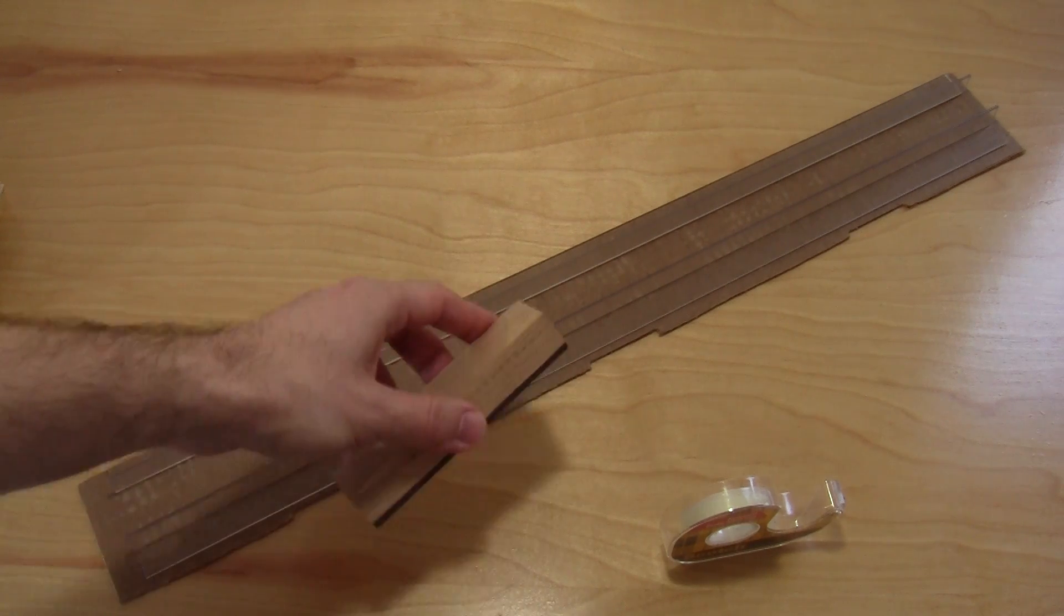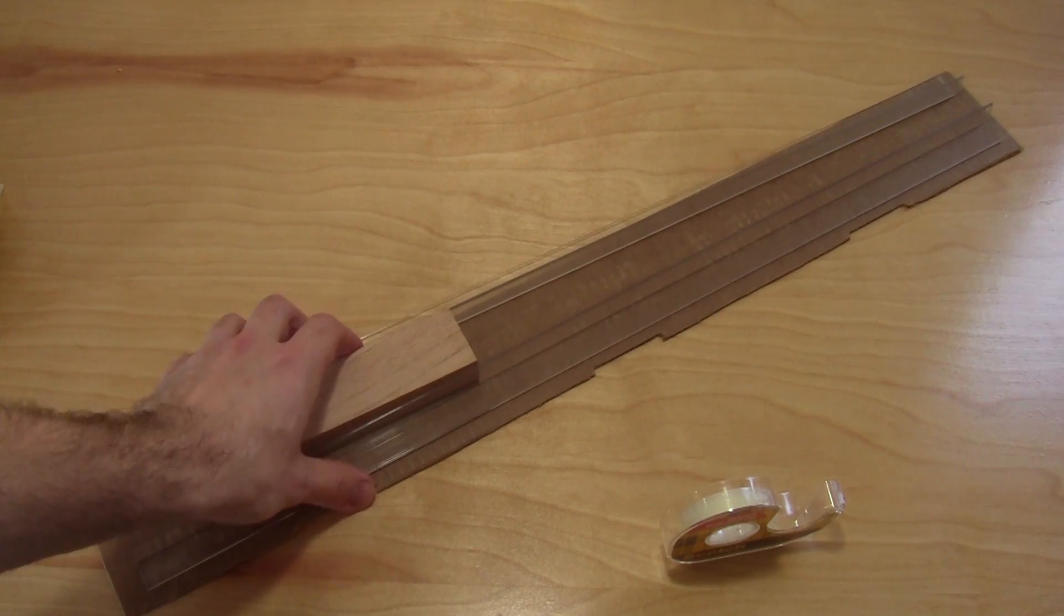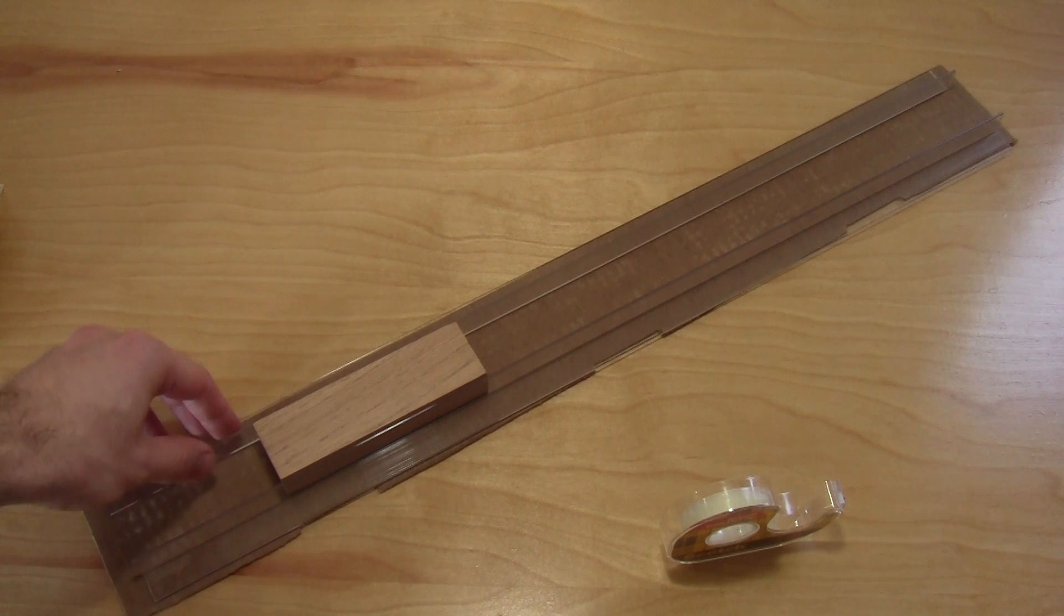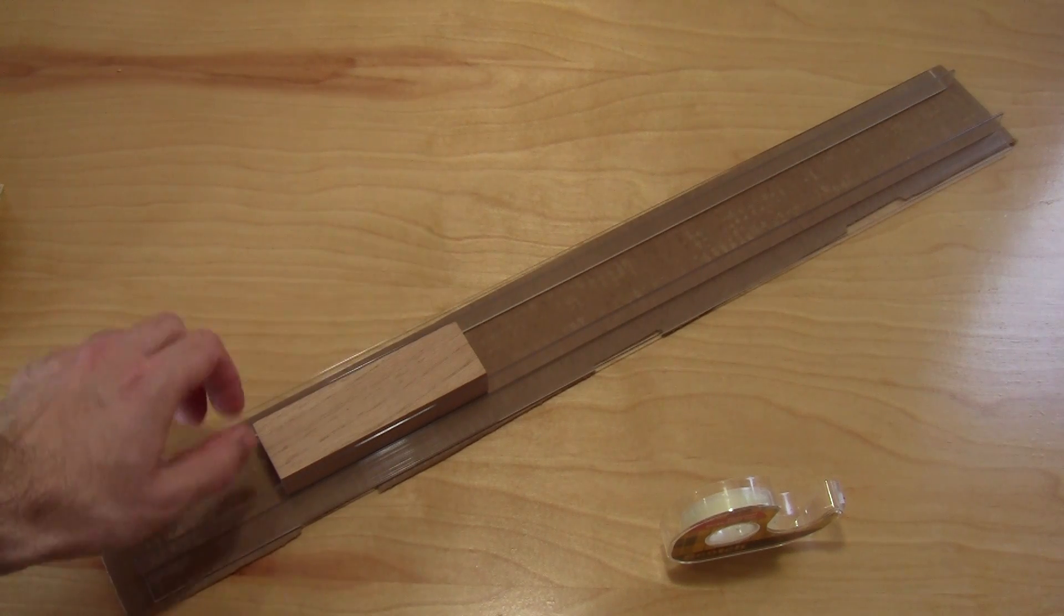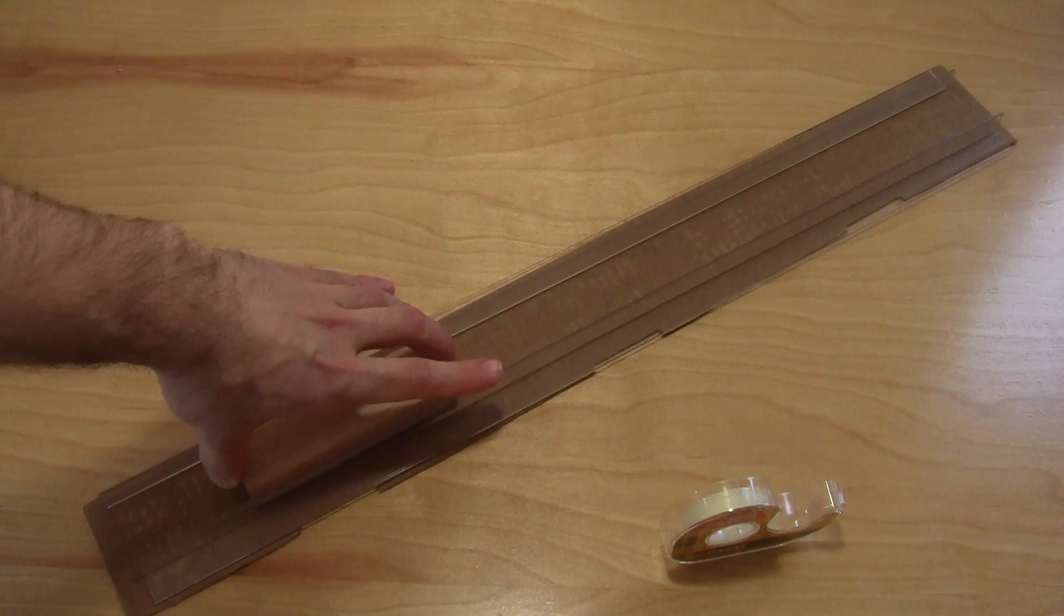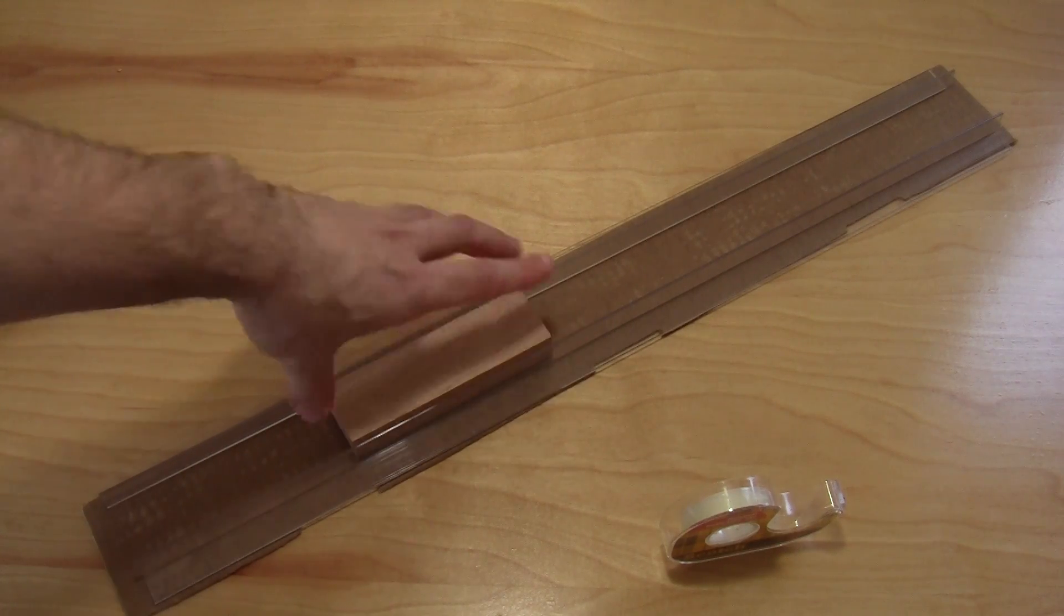So you can take the wooden block, use it as a spacer in between the angles, and move them out a little bit more so there's about a millimeter of space. This will make sure that the train can slide back and forth without getting stuck between the angles.